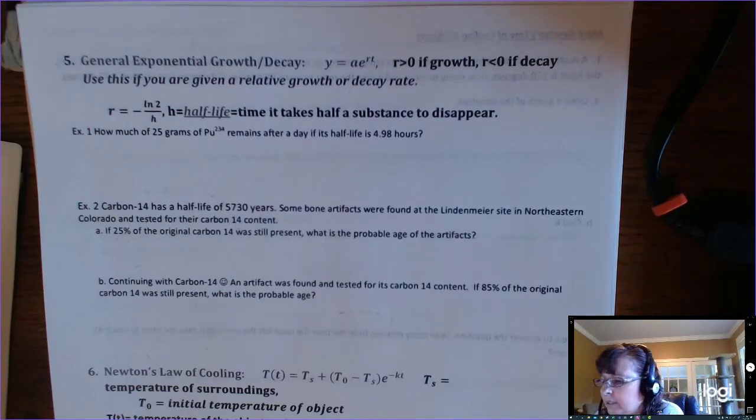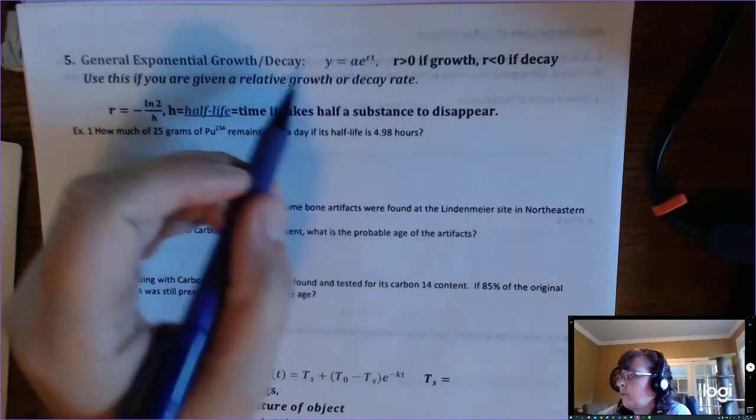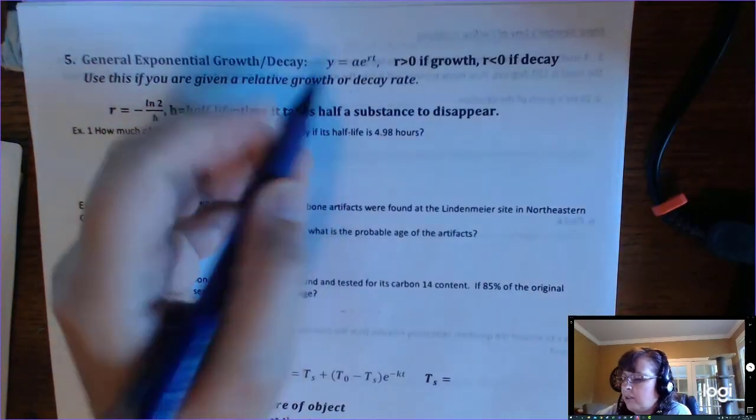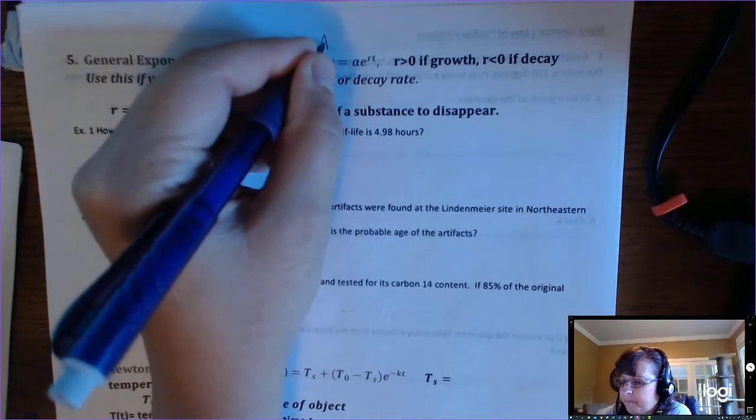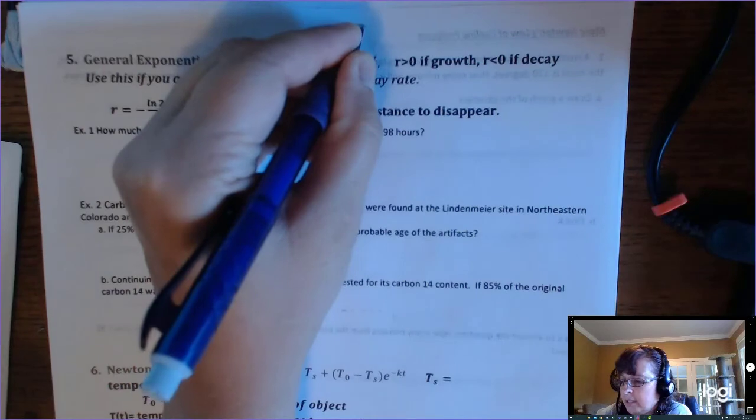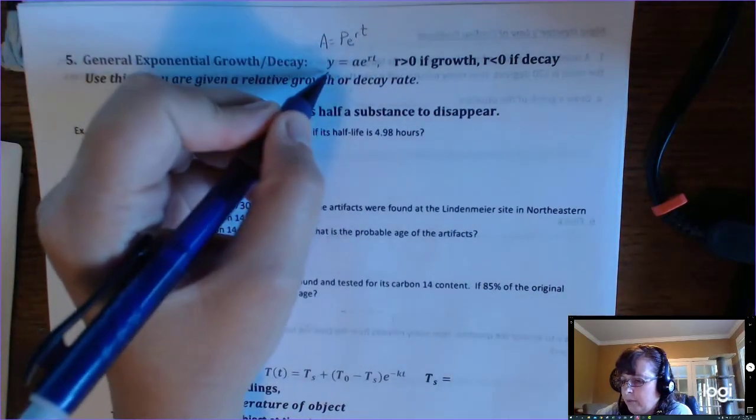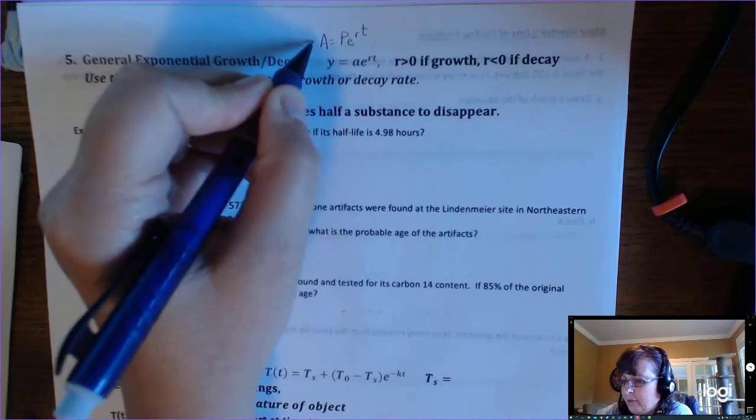Okay, so we are still in our modeling with exponential functions. I want to highlight this formula, General Exponential Growth or Decay, which looks a whole lot like PERT. From your continuously compounded interest lesson, you might remember PERT, A equals PE to the RT, well here is Y equals AE to the RT.